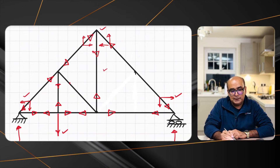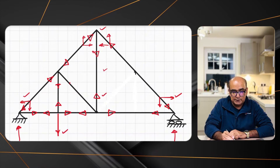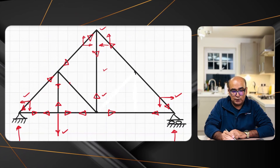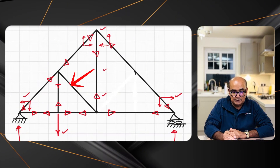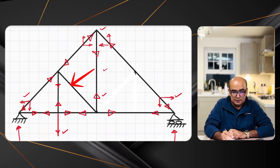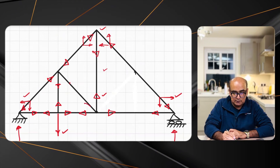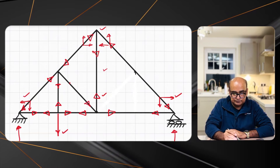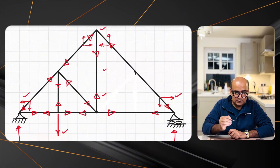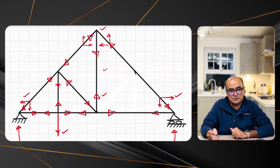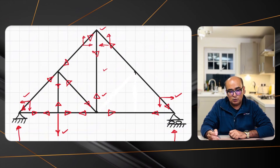We have a vertical force pointing downwards, so to balance it we need a vertical force pointing upwards. At the top of the structure, both components point upwards, so the king post force must point downwards. Once we have the vertical component pointing upwards in the adjacent member, the corresponding member's vertical component should point downwards. In this way, we have determined forces in all members.